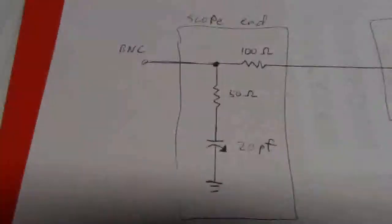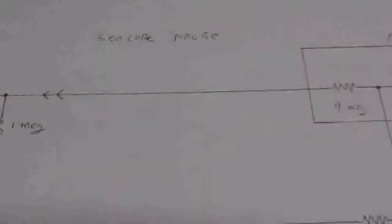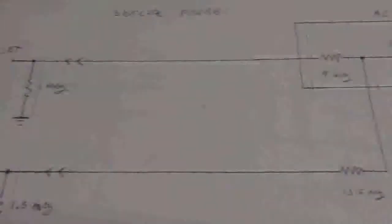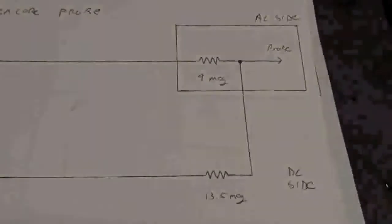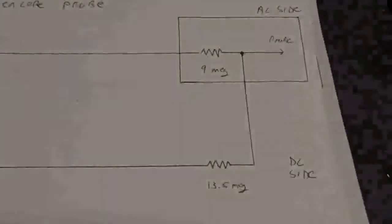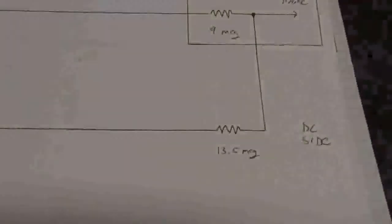The DC setup on the Sencore is slightly different. So this is what the Sencore looks like. You have your typical 9 meg input resistance. But then down on the DC side you have a 13.5 meg resistance.